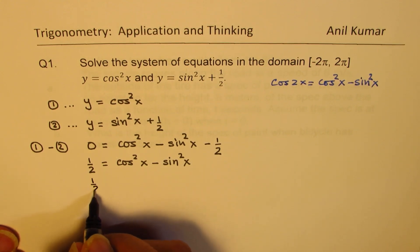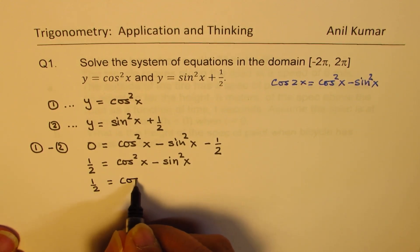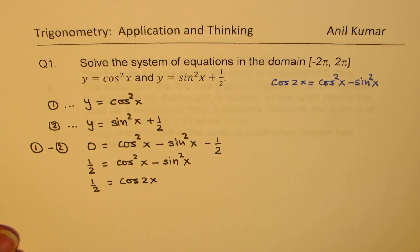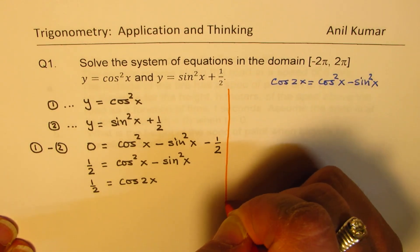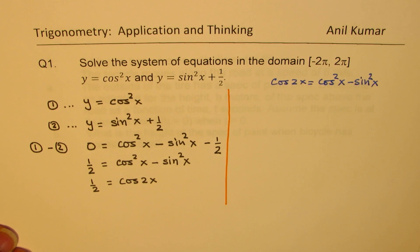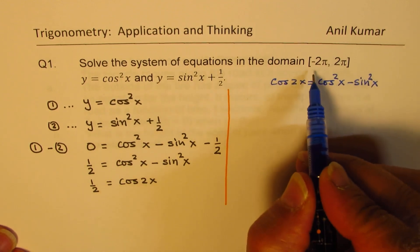So we get half is equal to cos 2x. Now it is a simpler solution. You can always pause the video, solve it further, find the answer, and then check with my solution. But there is a trick to this; some of you can get it wrong.